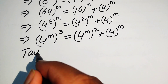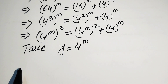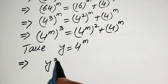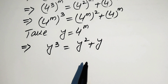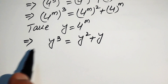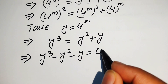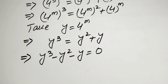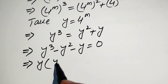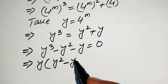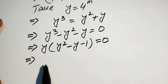We take the substitution y equals 4 to the power of m. With this substitution, the equation becomes y cubed equals y squared plus y. This is a cubic equation. Moving the right-hand side terms to the left, it becomes y cubed minus y squared minus y equals zero.